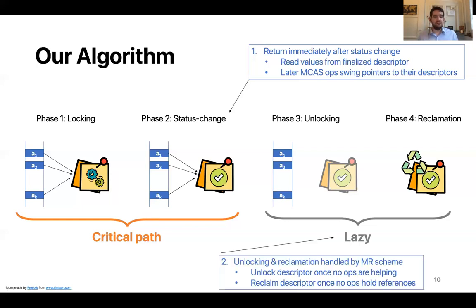A second characteristic of our algorithm is related to the unlocking phase. So like I said, the unlocking phase is now off the critical path and done in the background. And we choose to perform the unlocking phase as part of memory reclamation. So now memory reclamation does phases three and four. It starts by waiting until no thread is trying to help this operation anymore. And once that is the case, it detaches the descriptor from all the addresses and installs final values in the addresses, much as I have described for previous work. After that is done, the memory reclamation scheme waits until no thread has references to the descriptor. And once that is the case, the memory of the descriptor can be safely reclaimed.